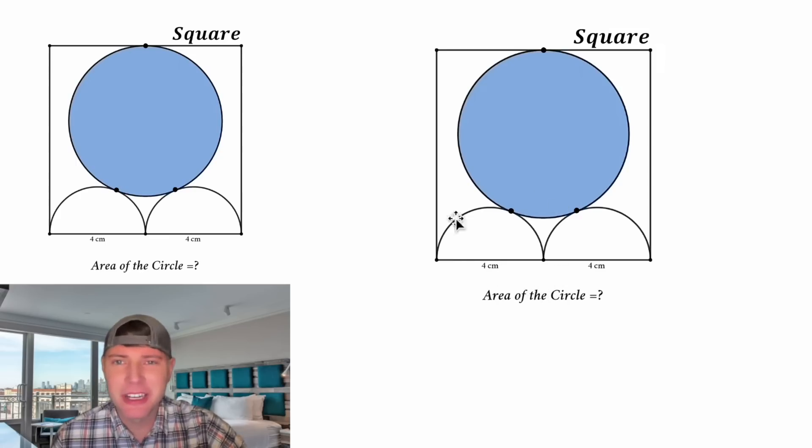Hey guys, this looks like a fun one. We're given a giant square with two semi-circles, each with a diameter of four. And there's a circle inside of the square, and we need to find the area of the circle. And I'm pretty sure we're supposed to assume these three points are tangent points.